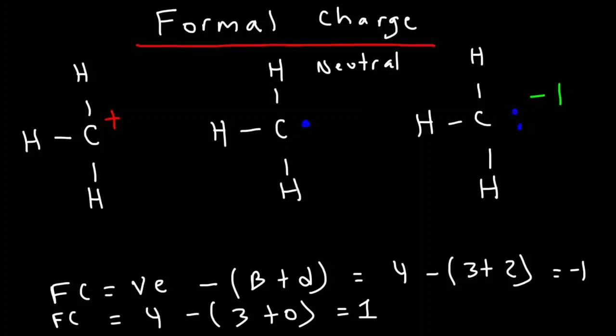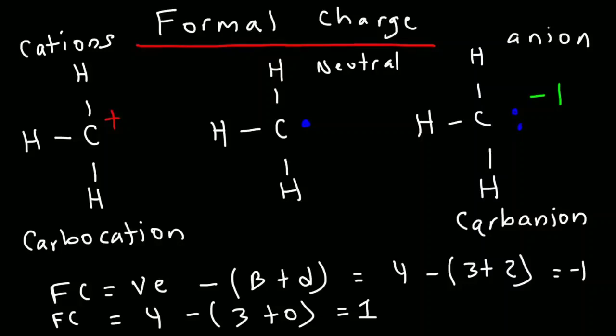Positively charged ions are called cations and negatively charged ions are known as anions. When you add a carbon to it, this is called a carbocation. And on the right, this is called a carbanion. Carbanions have negative charges.